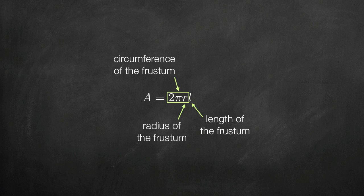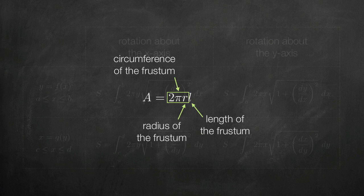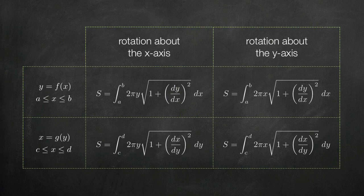If we make the length of the frustum shorter and shorter, so that there are more and more frustum approximating the surface area, until eventually the number of frustum goes to infinity, we can prove that the radius can be represented by the function itself, and we get an integral formula for the surface area.